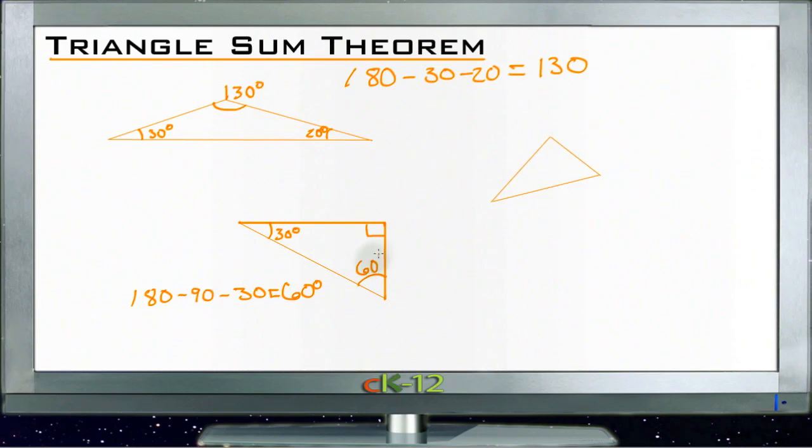So Triangle Sum Theorem just tells us that for any triangle, it always has 180 degrees as its interior angle degree measure—all interior angles equal 180 degrees.